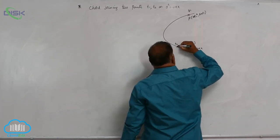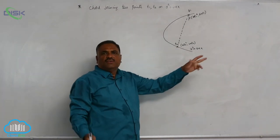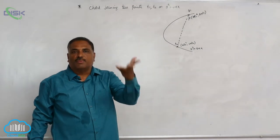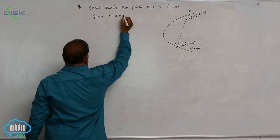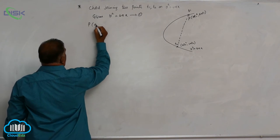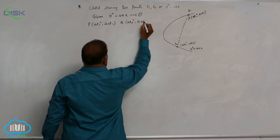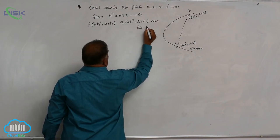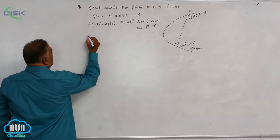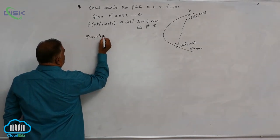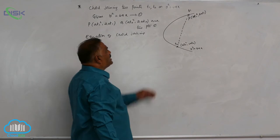We require the equation of the line joining these two points. Once you know the two points, from the straight line chapter, the two-point form can be applied. The given parabola is y² = 4ax — let us consider this equation 1. P(at1², 2at1) and Q(at2², 2at2) are two points on equation 1. We require the equation of PQ, i.e., the chord joining t1 and t2.